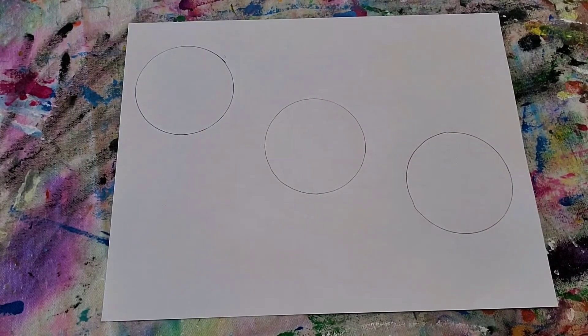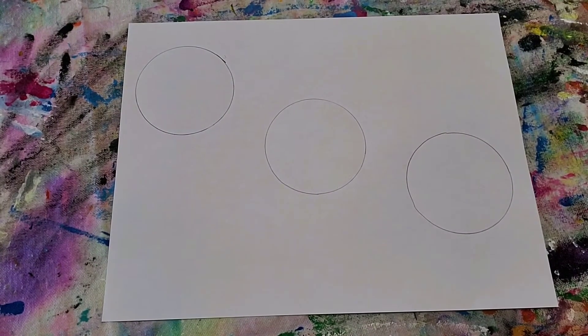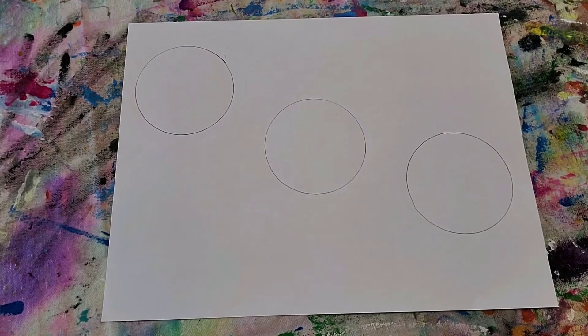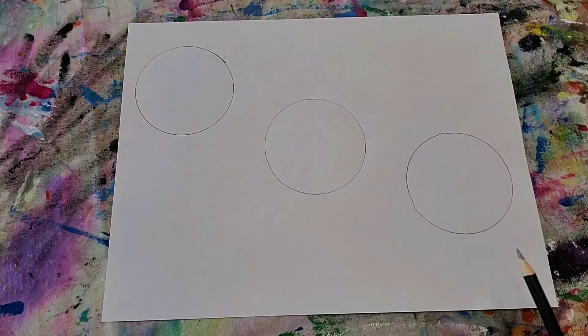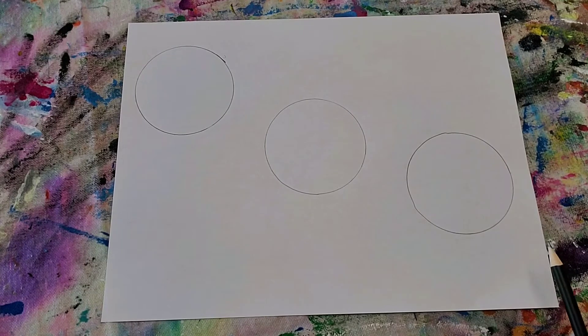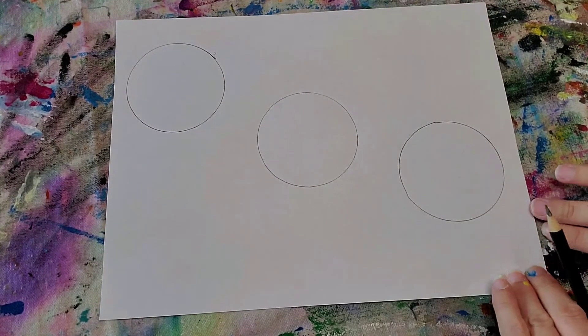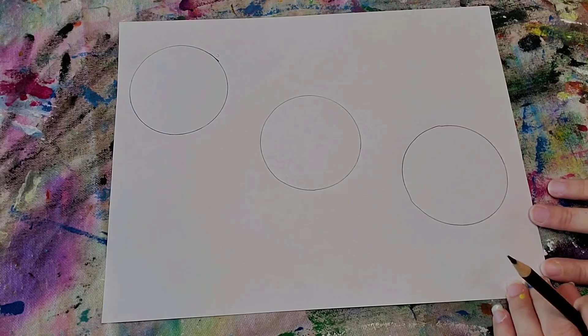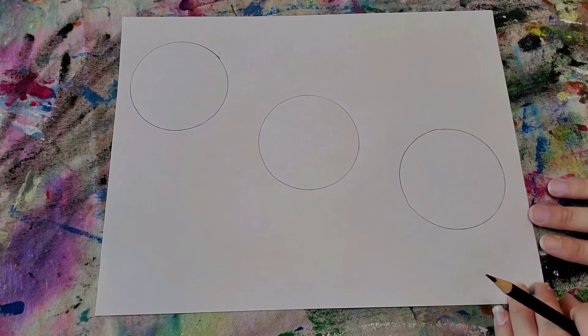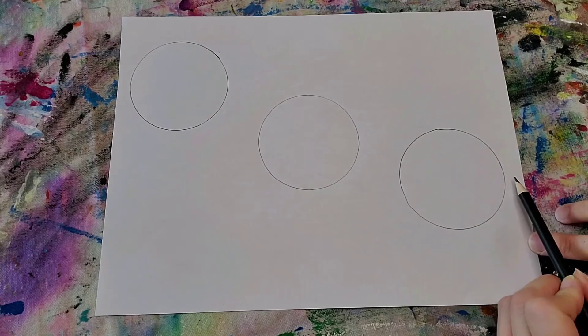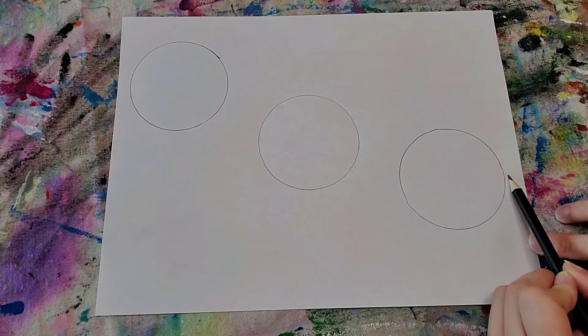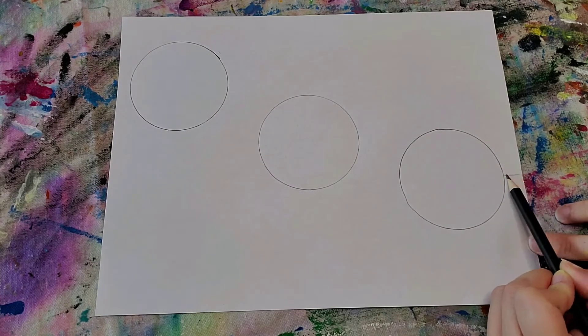Okay, so now we have three circles. Before we start shading our circles, I'm going to make what's going to be like the ground, a line that kind of grounds this. So kind of halfway through this first circle, I'm going to make a little line here.